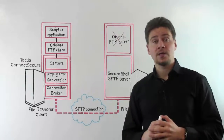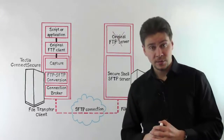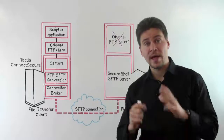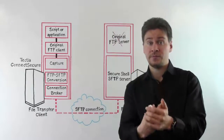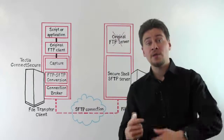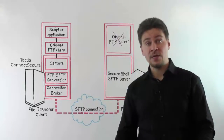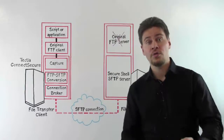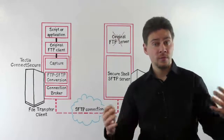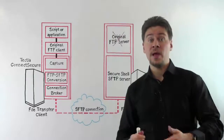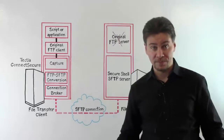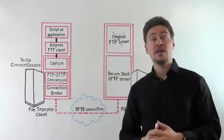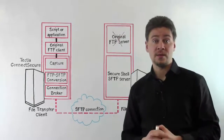The final customer challenge was also security-related. The customer needed to develop SFTP support into their application as fast as possible, because recent changes in regulations forced them to start using a secure file transfer protocol — specifically SFTP. The customer considered whether to develop their own custom SFTP client, or to use our APIs in Connect Secure to speed up the development process. In the end, the customer chose Connect Secure and used our APIs to send application traffic over SFTP to the destination server.